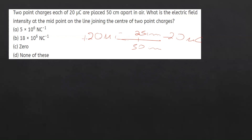At the midpoint (25 cm from each charge), the electric field intensities due to both charges point in opposite directions — one toward and one away from the midpoint. Evaluating the contributions, the net result at the midpoint is that the two fields partially or fully cancel, and we determine the net electric field intensity.